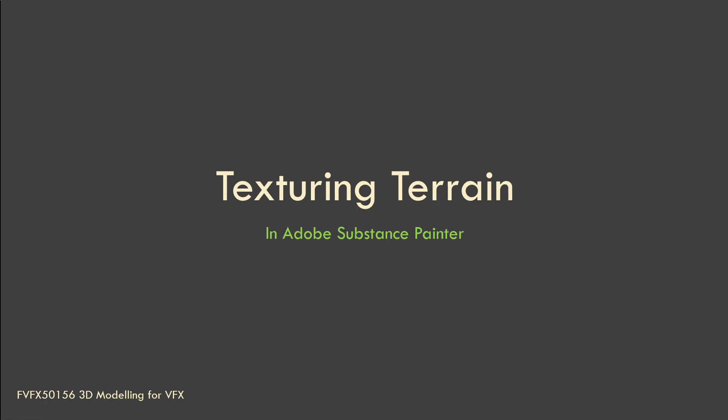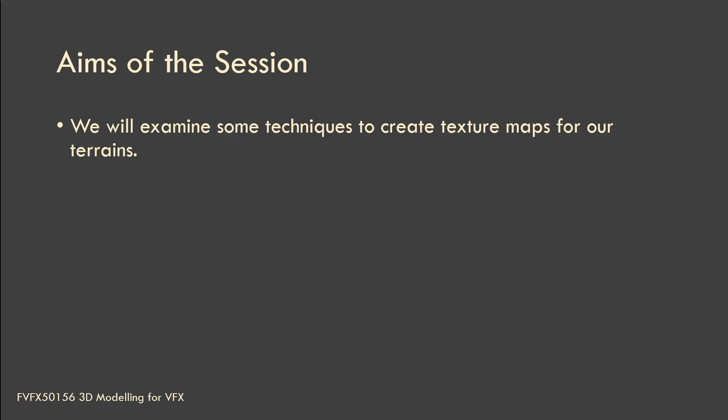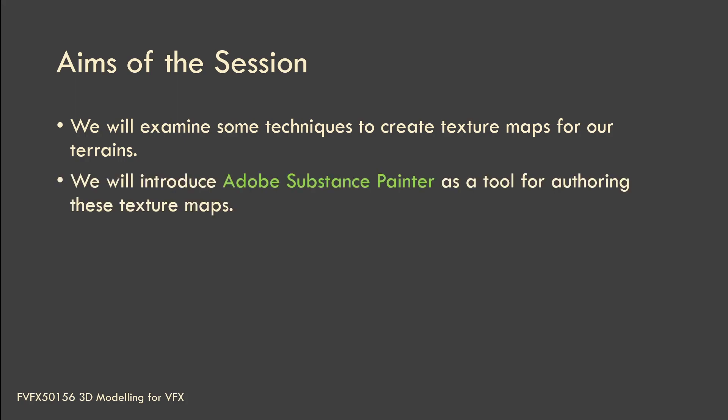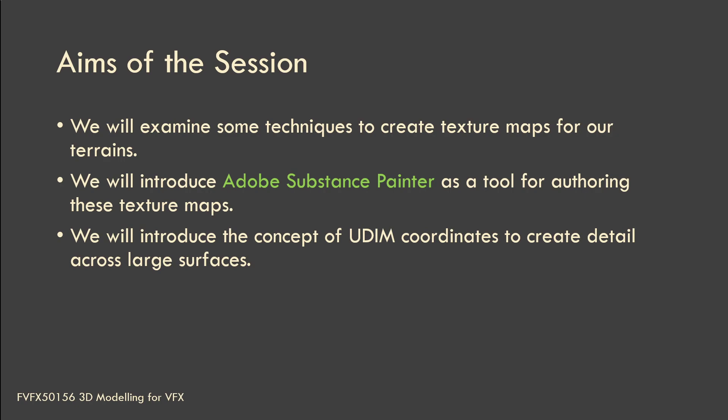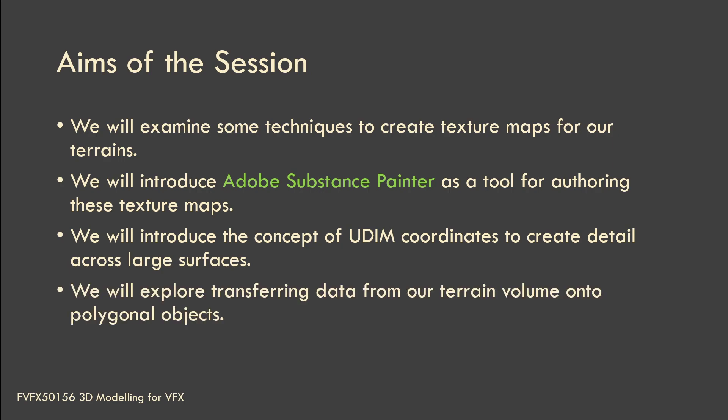Hi guys, welcome to this video series on texturing terrain using Substance Painter. We're going to look at one approach to adding texture maps to our terrain using Adobe Substance Painter. It also gives us the opportunity to introduce new concepts such as UDIM coordinates to ensure enough detail in our large surface terrain without pixelation, and to look at ways we can extract data from our high-polygon terrain and bake that down onto our polygonal objects for render time.